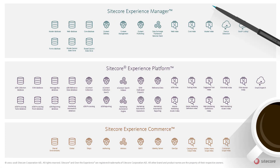The Sitecore 9 product series consists of three major products: the Sitecore Experience Manager, the Sitecore Experience Platform, and the Sitecore Experience Commerce product. Each of the Sitecore products contains a number of logical entities which, together with a number of cloud services, forms the entire functionality of the Sitecore platform.